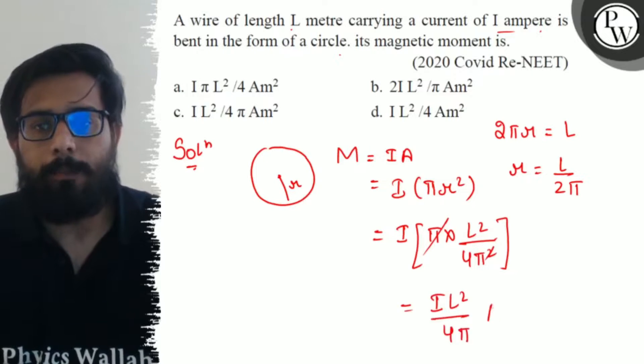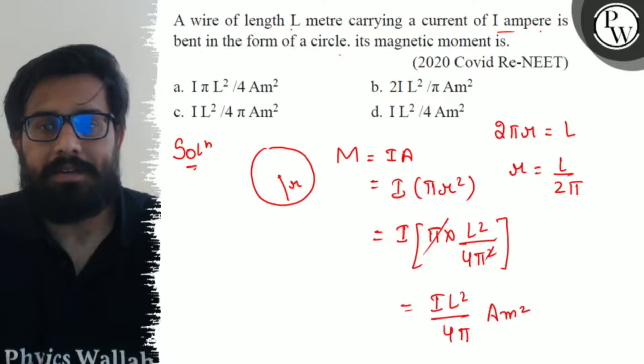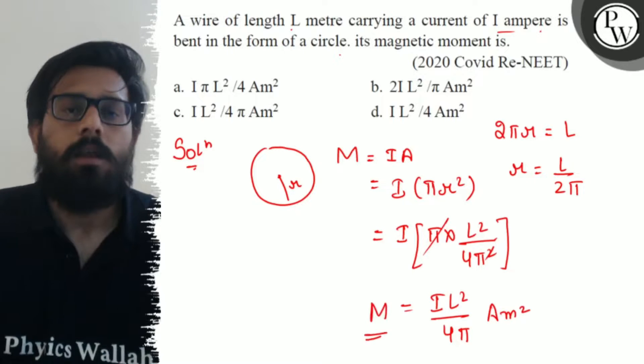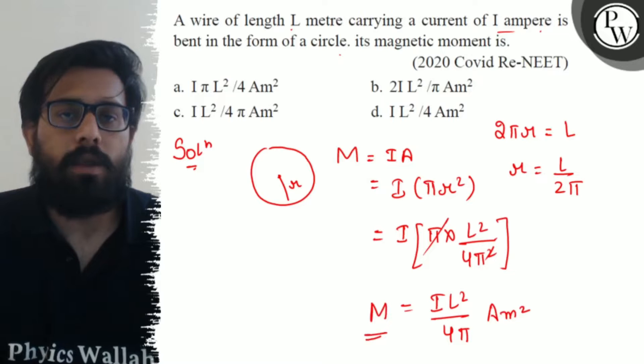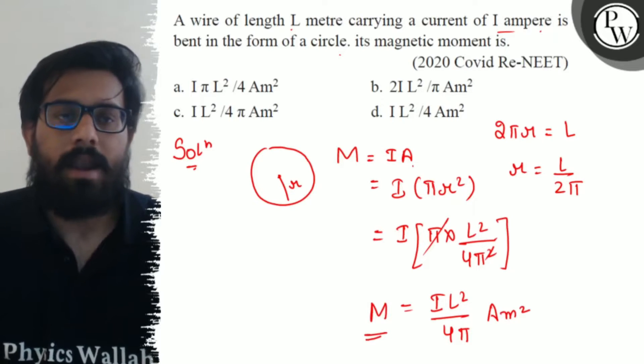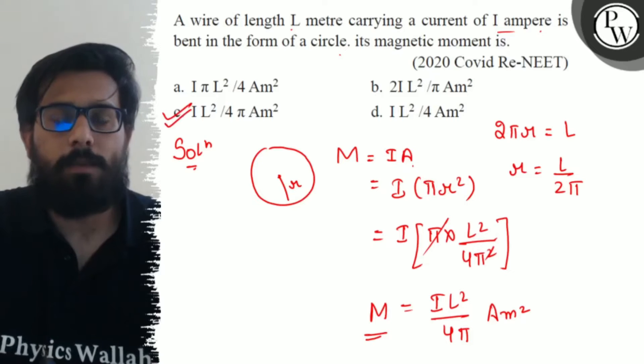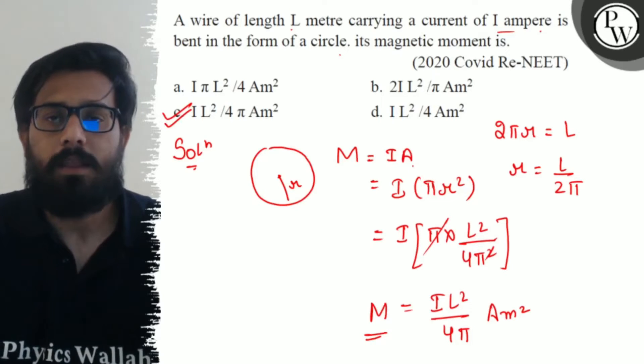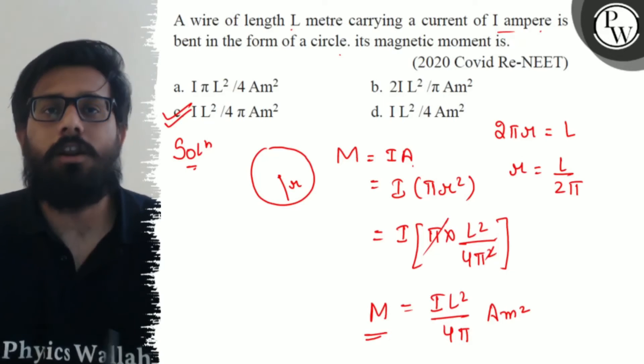So for the magnetic moment of the loop, we get a value of I L² upon 4π. So C option is absolutely correct, and I hope you got the concept of this question. All the very best.